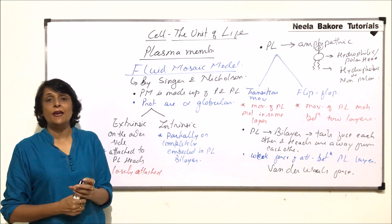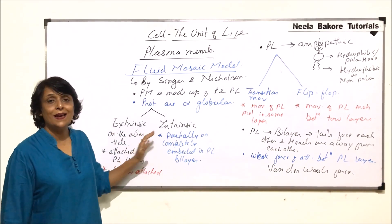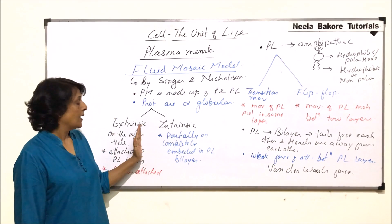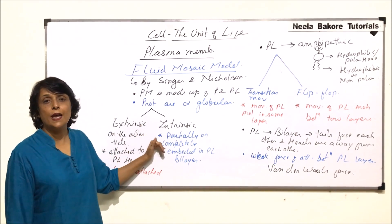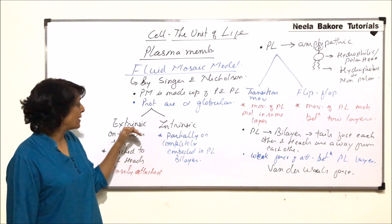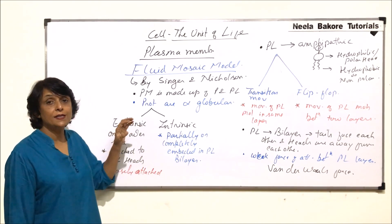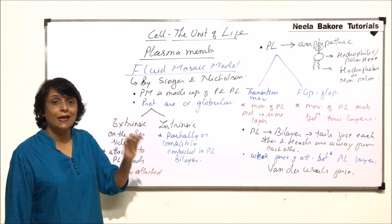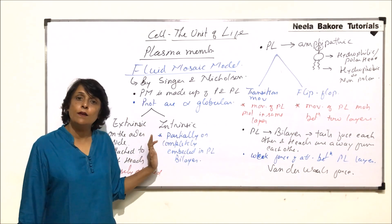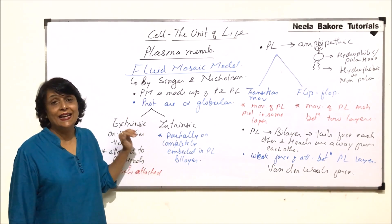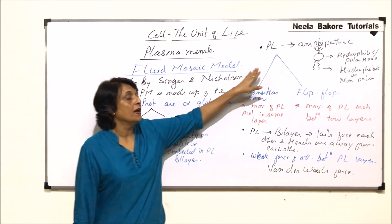So the information which they gave was slightly changed. Two types of proteins were mentioned: extrinsic and intrinsic — also called external and internal proteins. Extrinsic proteins are attached to the phospholipid heads, while intrinsic proteins are embedded in the phospholipid bilayer, either partially or completely.